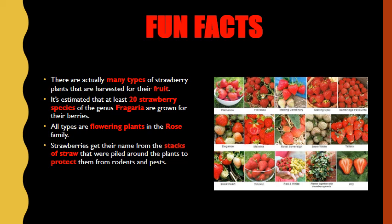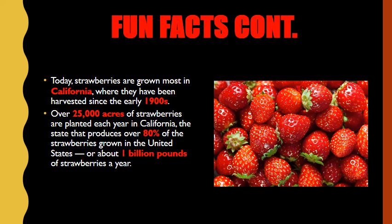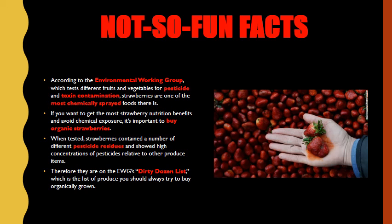The fun facts continue. Today, strawberries are grown mostly in California, where they've been harvested since the early 1900s. Over 25,000 acres of strawberries are planted each year in California — the state that produces over 80% of the strawberries grown in the United States, or about 1 billion pounds of strawberries a year. That's a lot of strawberries.